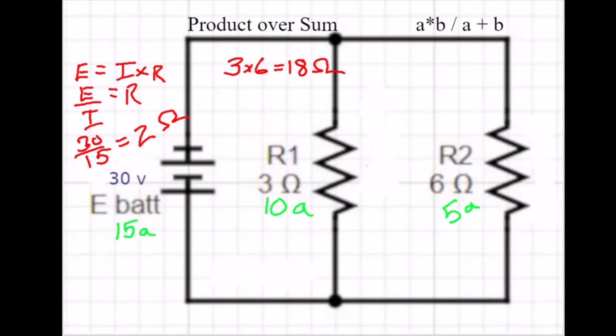Over the sum. What's the sum? Well, we have 3 plus 6 equals 9. If we put the product over the sum, 18 over 9, we come up with 2 ohms,